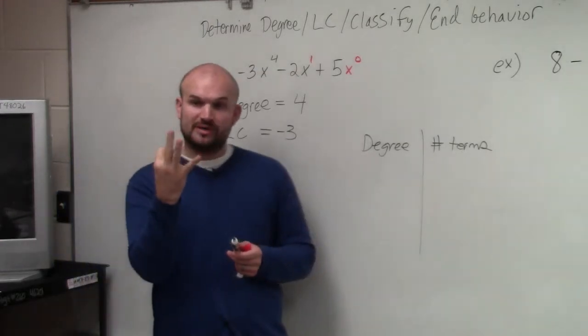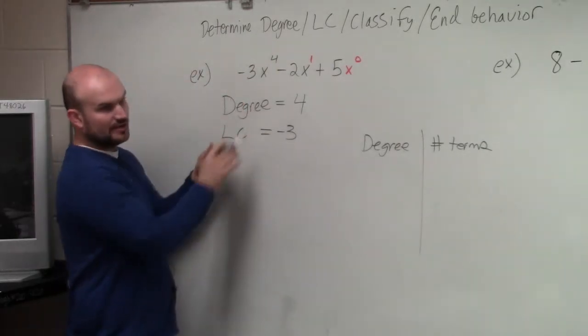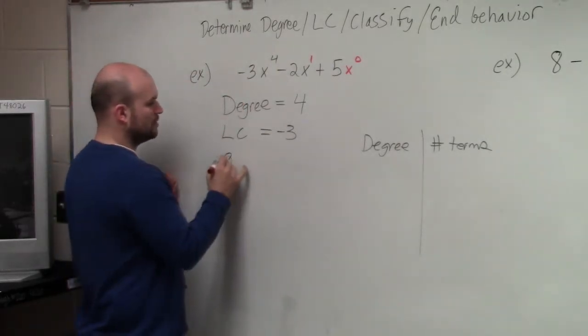Degree of 3, it's cubic. And degree of 4, it's quartic. So we look at this degree and we say, oh, degree is 4, so it's quartic.